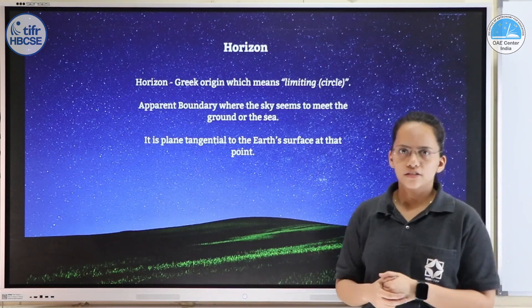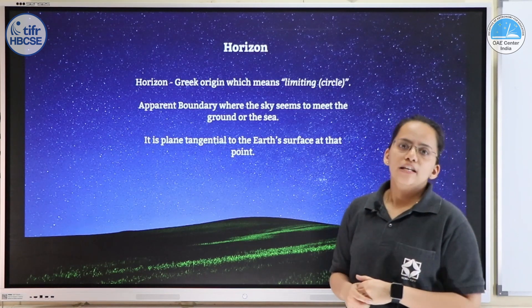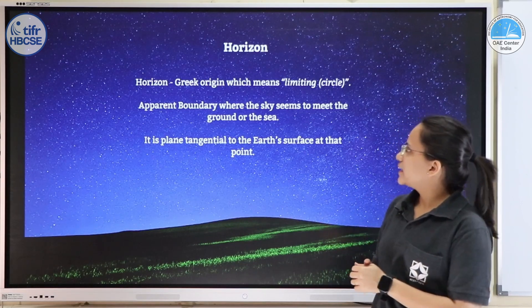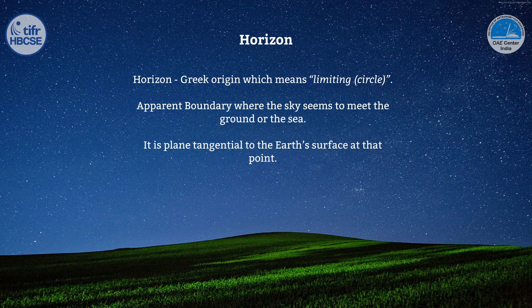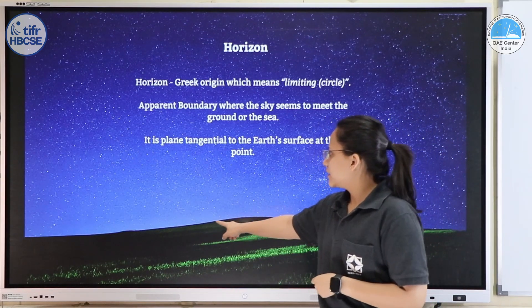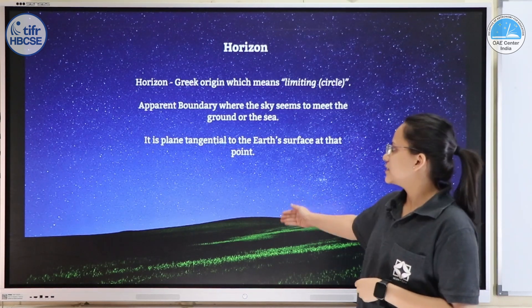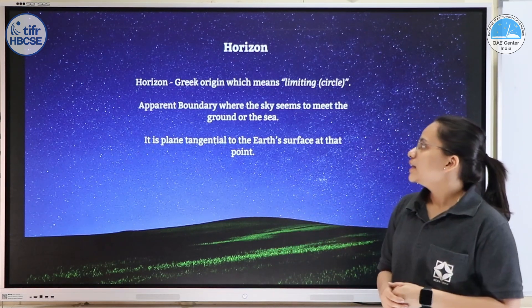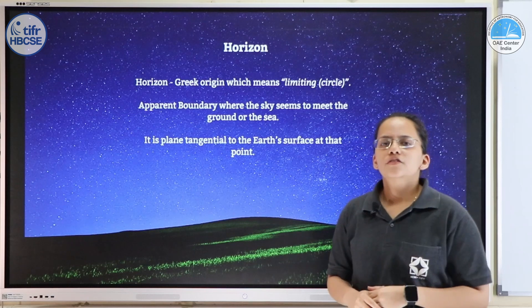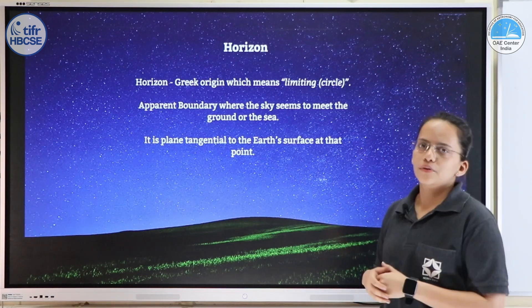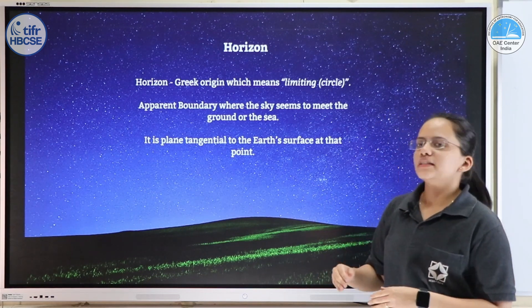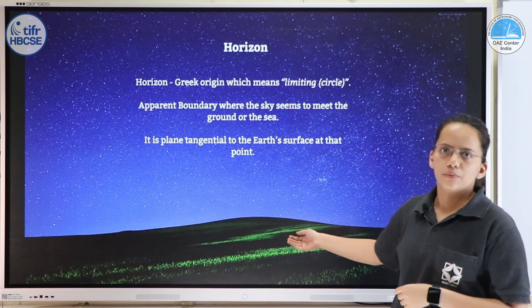Let's start with the very basic term horizon. This word has a Greek origin which means 'limiting circle.' It is defined as an apparent boundary where the sky seems to meet the ground or the sea. In this picture you can see this line where the sky is apparently meeting the ground — that is the horizon. It is also defined as a plane that is tangential to the earth's surface at that particular point.